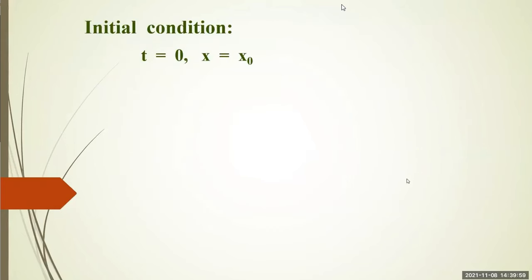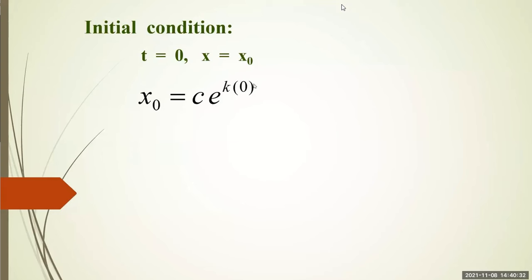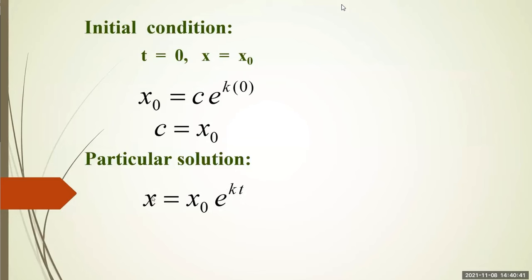More often than not, you will be given initial conditions. When time equals zero, x equals x sub zero, the initial number. Substituting: x₀ equals c times e to the k times zero. So the e to the zero cancels out and becomes 1, giving c equals x sub zero. So the particular solution is x equals x₀ e to the kt.